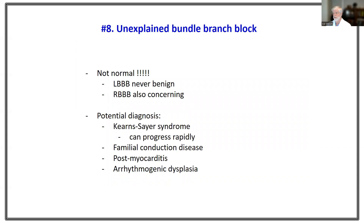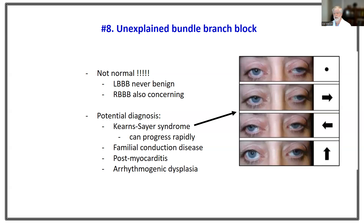Number eight: unexplained bundle branch block — I never consider this normal. Left bundle branch block is never benign. Right bundle branch block is concerning for subtle diseases including Kearns-Sayre syndrome, which can progress very rapidly to complete heart block, as well as familial conduction system diseases, post-myocarditis findings, or arrhythmogenic dysplasia. Kearns-Sayre syndrome is a mitochondrial disease affecting muscle; the telltale physical exam findings are ptosis of the eyelids and restricted extraocular motion. If you see those findings with right bundle branch block, you must act quickly to consider pacing.